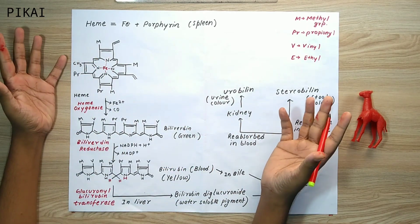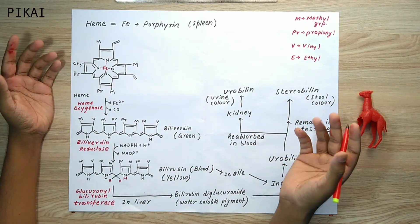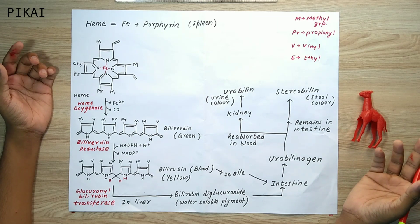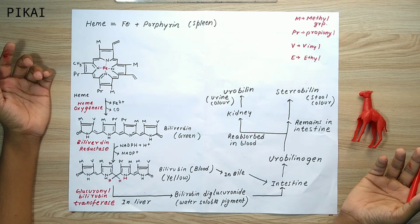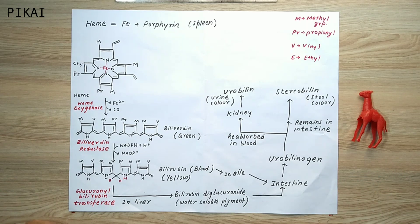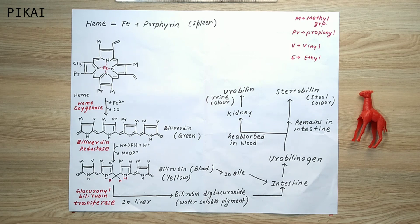Today we will be talking about the degradation of heme, which starts in the spleen. The spleen is known as the graveyard of erythrocytes, meaning the death of erythrocytes takes place inside the spleen. When the erythrocyte dies, it releases out its heme part of hemoglobin.